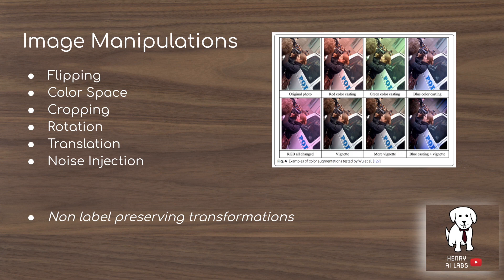Image manipulations are the most commonly used data augmentation in computer vision. This includes things like flipping, color space, cropping, rotation, translation, and noise injection. The image on the top right shows an example of some color augmentations. You'd want the convolutional neural network to be invariant to these color transformations and still be able to recognize objects despite lighting differences.